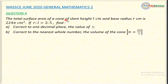The total surface area of a cone of slant height L centimeters and base radius R centimeters is 224π centimeter square. The ratio R to L is 2 to 5. Part A asks us to find, correct to one decimal place, the value of R. Part B asks us to find, correct to the nearest whole number, the volume of the cone. Take π as 22 over 7.